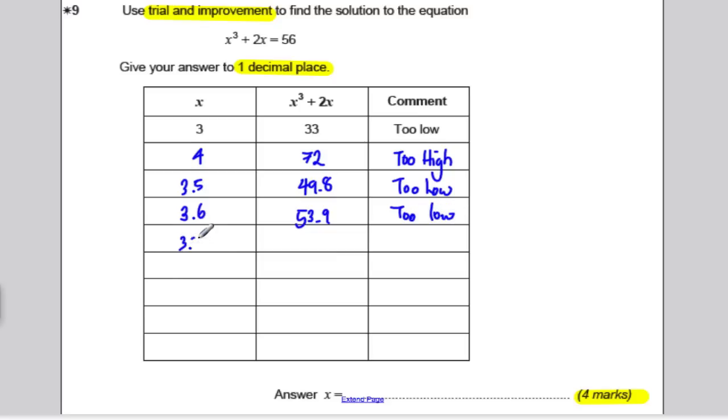So, it looks like 3.7 is going to take us too high, let's have a look. So, we get ourselves 58.1 about, which is too high now. So, now we've found our consecutive numbers, 3.6 and 3.7. One's too low, one's too high.